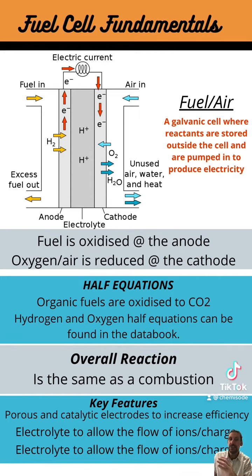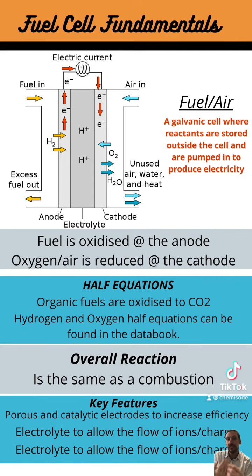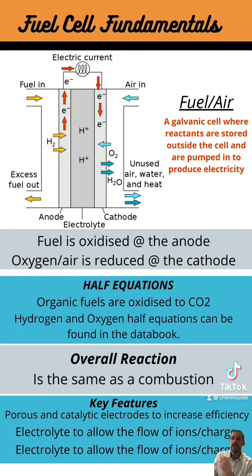Lastly, the key features of fuel cells. The electrodes must be porous and catalytic. This increases the efficiency of our reaction because it increases the speed and the amount of electrons that can come out from our cell. Secondly, the electrolyte — what does it do? It separates out our reactants so we don't get a direct redox reaction producing heat. It also allows for the transfer of ions and charge and completes the circuit of our cell.